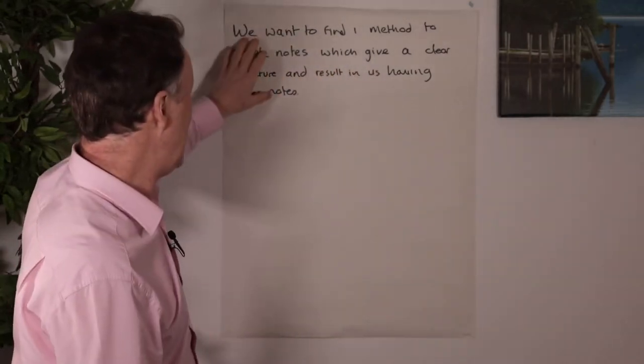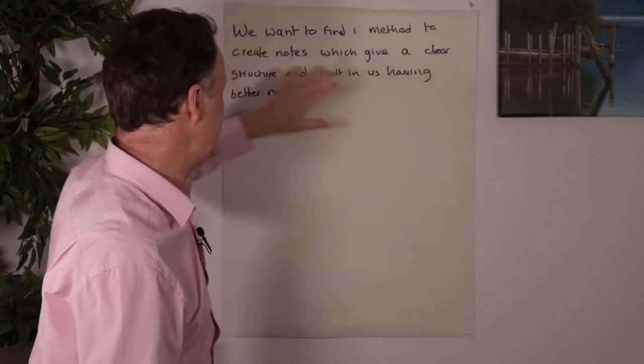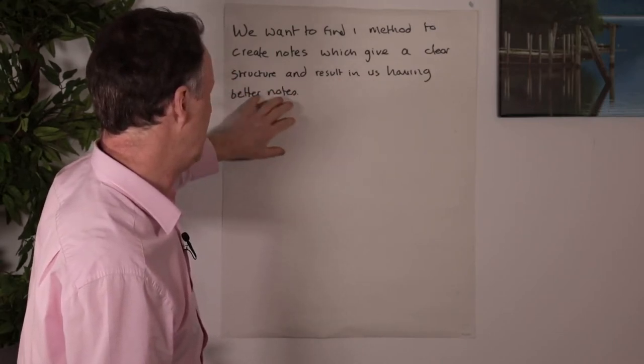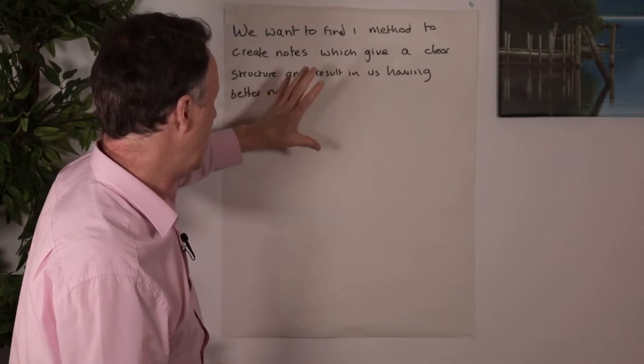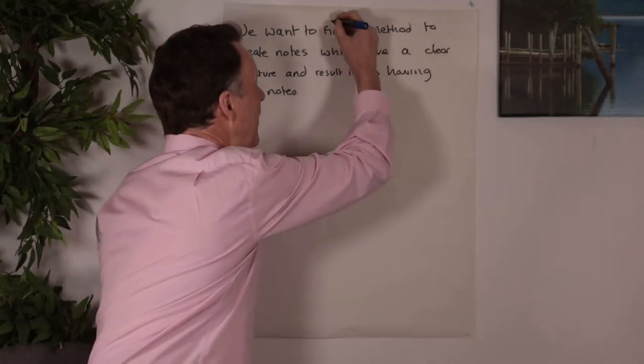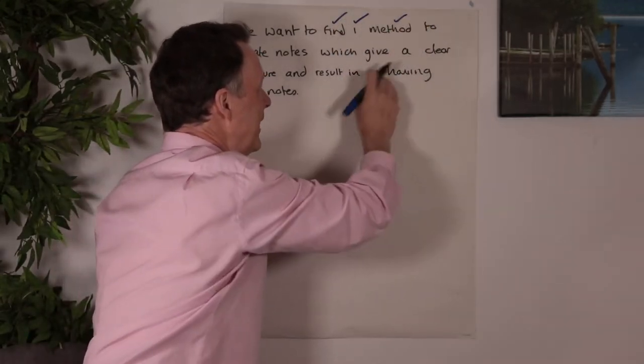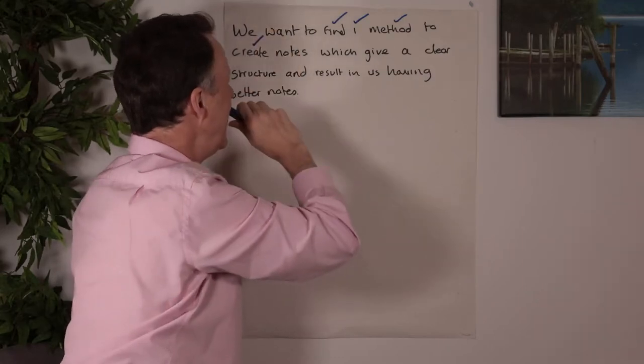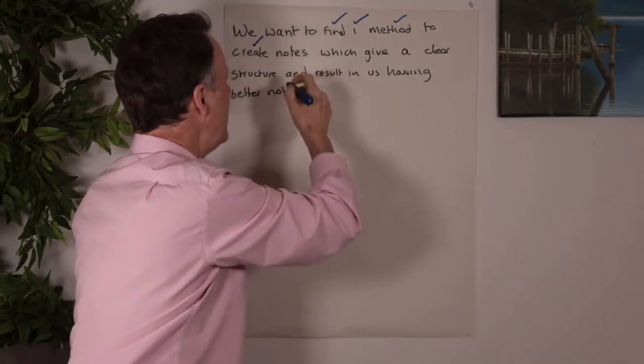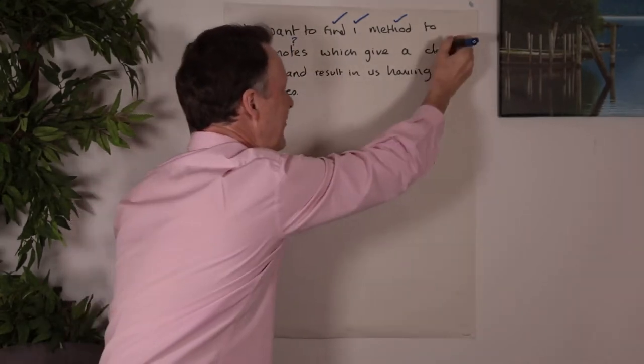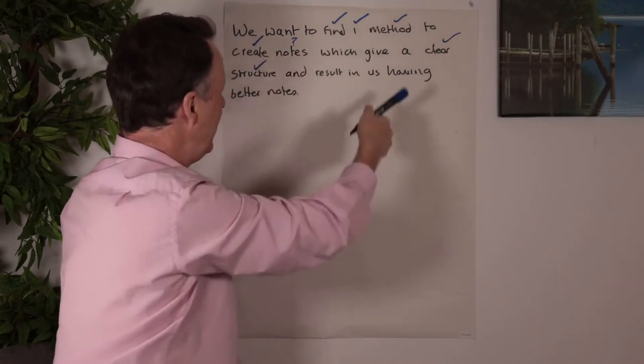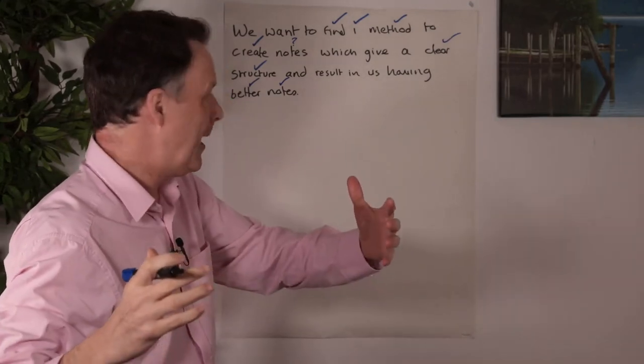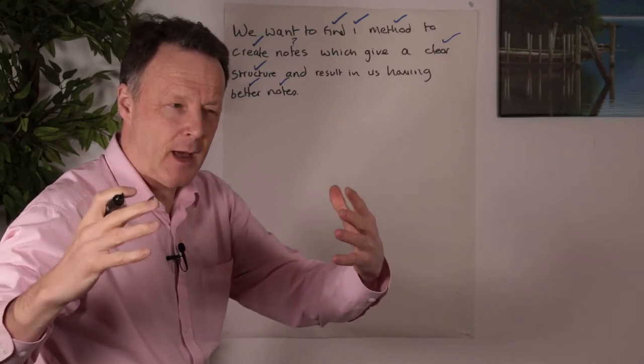So the first secret to being able to restructure language is deep filtering. And I'll show you how it works. So here I've got some information and we want to find one method to create notes, which give a clear structure and result in us having better notes. So what would I deep filter? So I would probably keep find, I'd probably keep one, I'd probably keep method actually. And I'd probably keep create, I may or may not keep notes. I'm not sure at this point, clear structure, definitely keep and better notes. I would definitely keep now, already I've filtered out a lot of information.